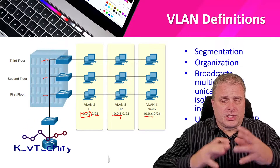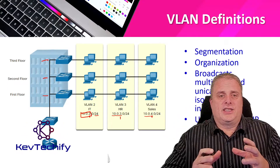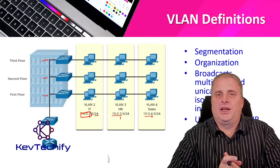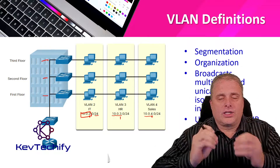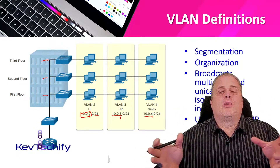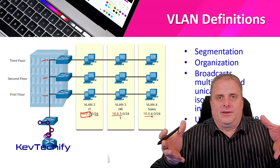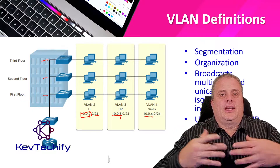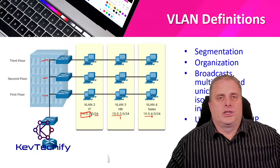That gives us a smaller broadcast domain. If we didn't have these VLANs, all devices would be in the same broadcast domain, passing traffic between each other and causing a lot of congestion. These VLANs allow us to break our network into smaller networks. This is sort of like subnetting a subnet — we are virtually segmenting our LANs into smaller networks.